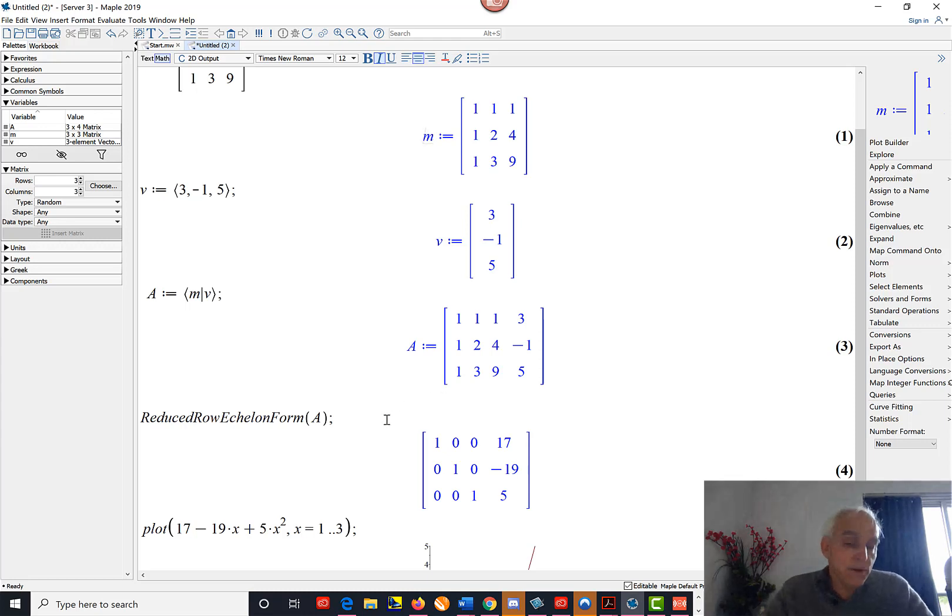And now we can do the whole thing with one command: the command ReducedRowEchelonForm of A. So now the computer is going to go through the steps that we've just done. The point here is that we know what the computer has been doing - it's been doing basically the same thing that we just did, except it does it in a flash, and happily it gets the same result that we do.